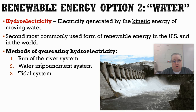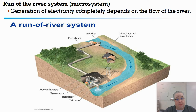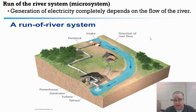One type is called a run-of-the-river system, another is a water impoundment — a big fancy word for a dam — and then we have a tidal system. All three are different ways to generate electricity using the kinetic energy of water. The run-of-the-river system is also known as a micro system, used to generate electricity maybe for a single home or a couple of homes. It wouldn't be used on a really large scale.